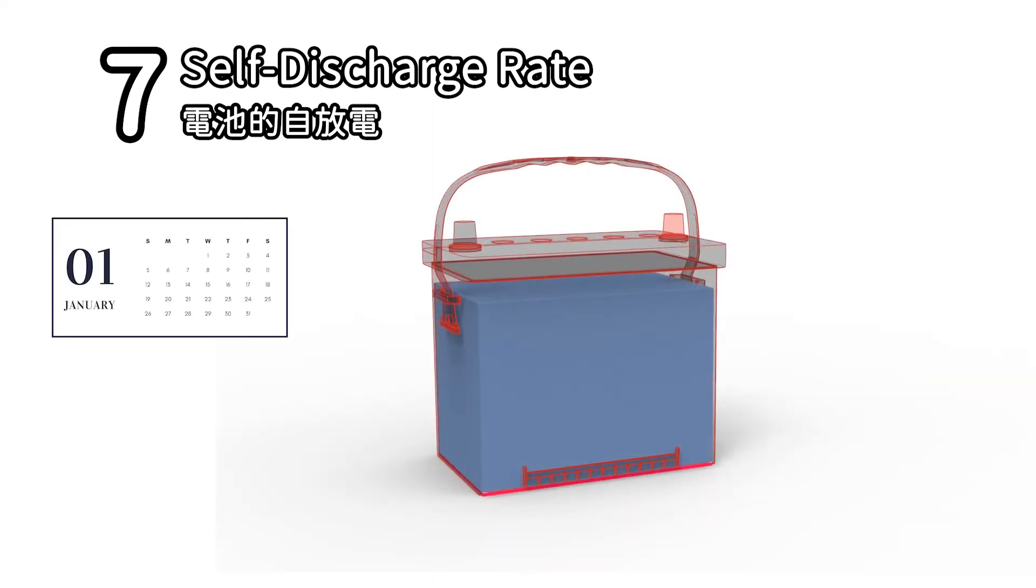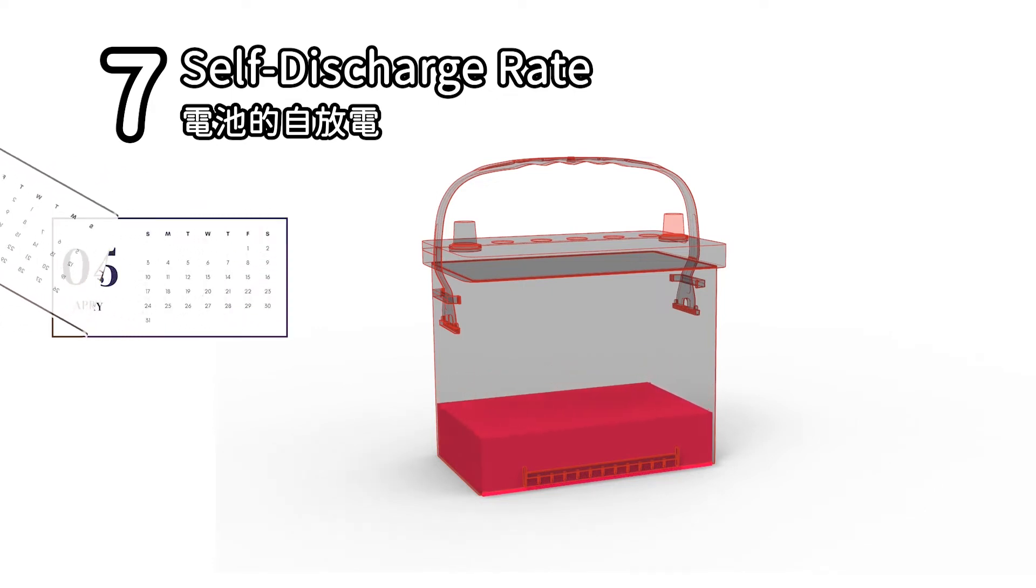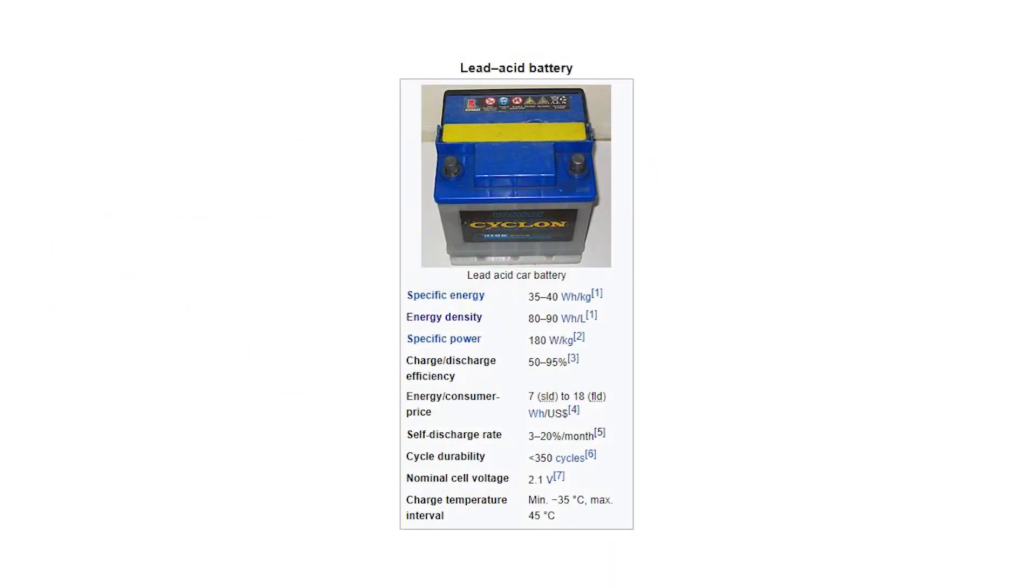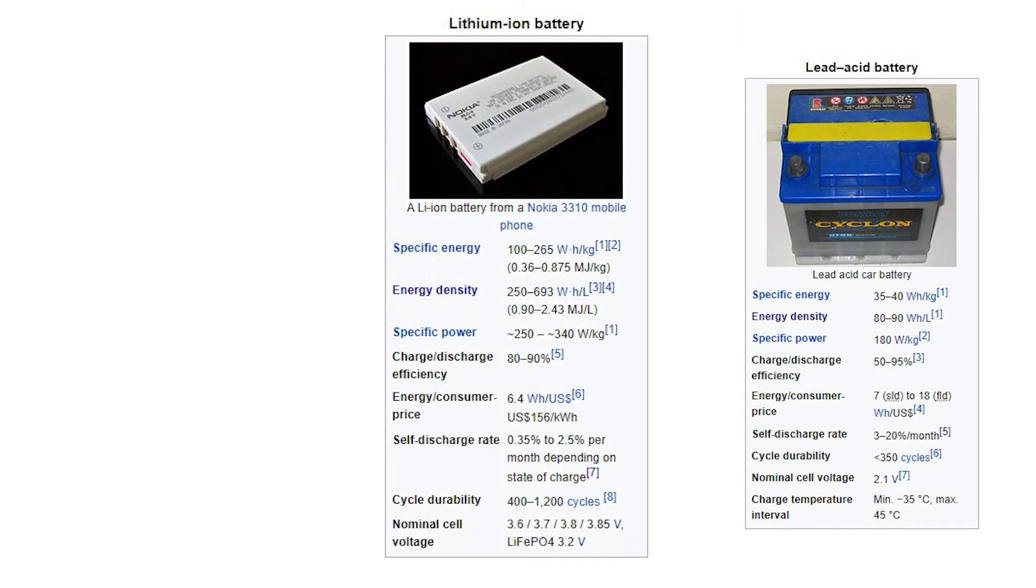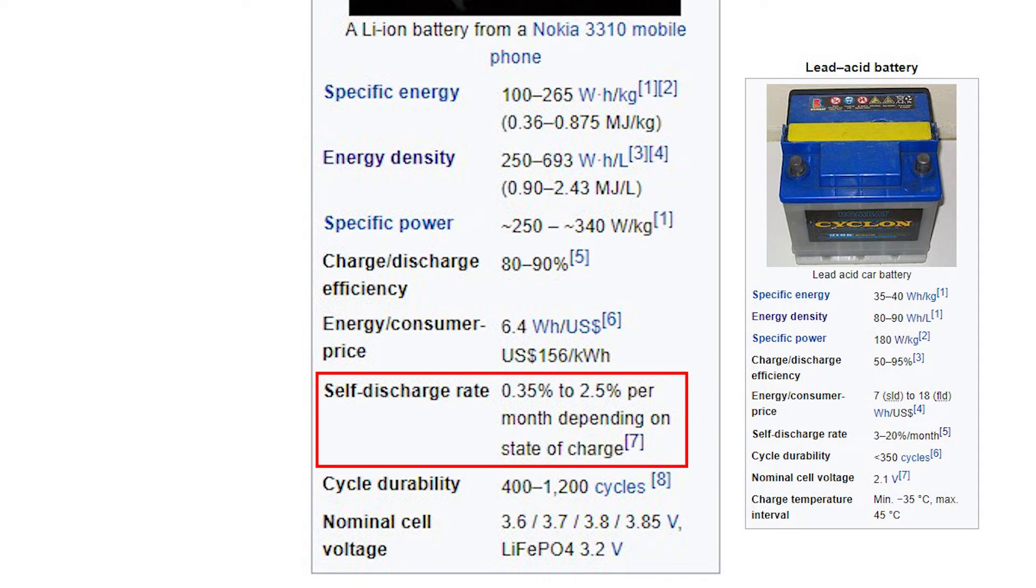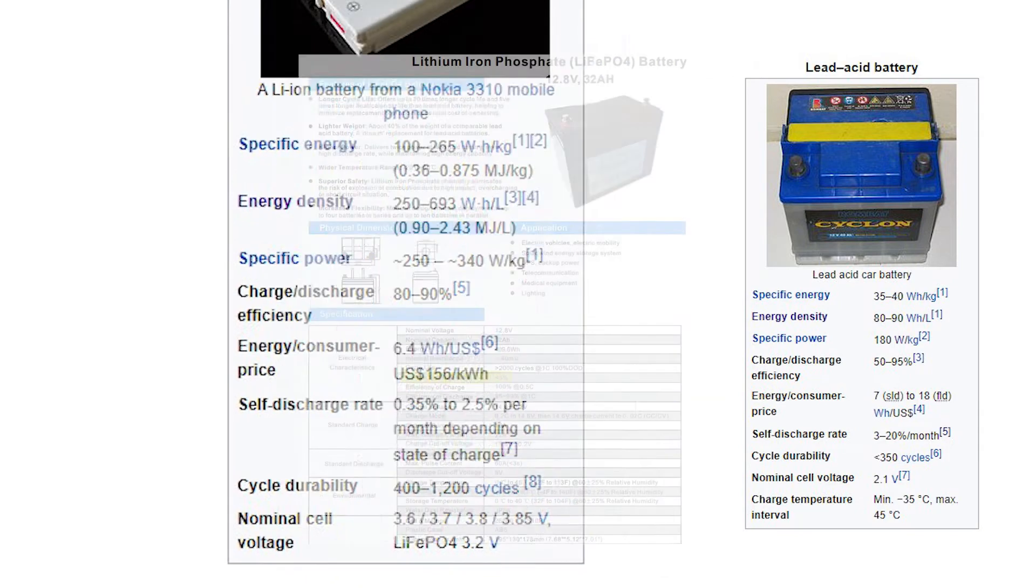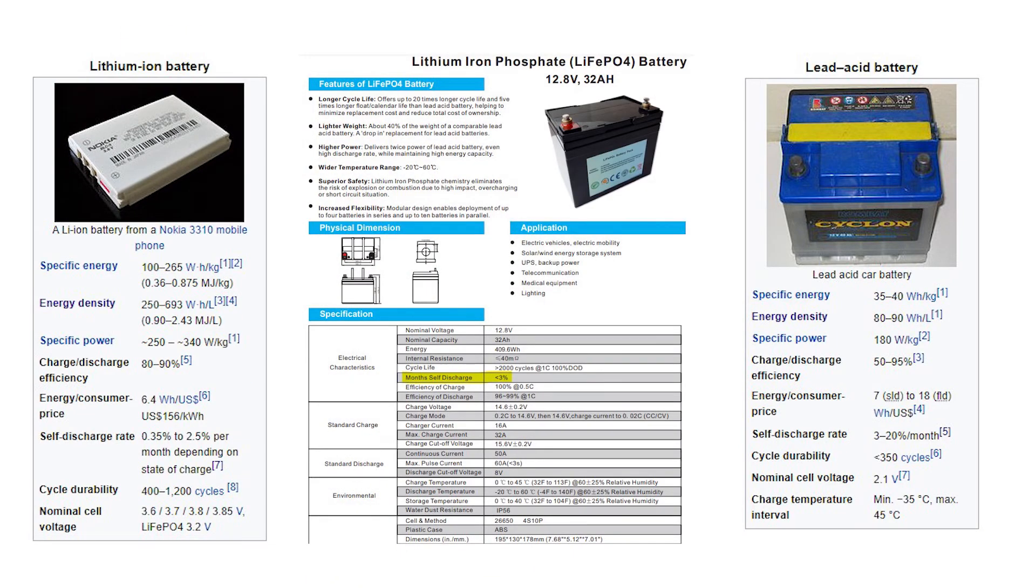7. Self-discharge of the battery. This is a phenomenon in batteries where internal chemical reactions reduce the charge stored in the battery. Even without any connection between the electrodes, the battery loses power. The rate of self-discharge will vary depending on battery type, ambient temperature, and other factors. According to the data, the self-discharge rate of lead-acid batteries is about 3-20% per month. Li-ion battery about 0.35-2.5%. LiFePO4 battery below 3%.